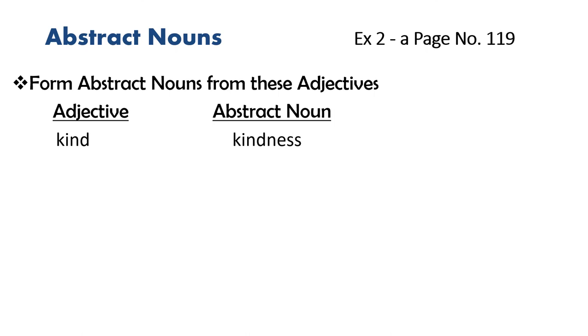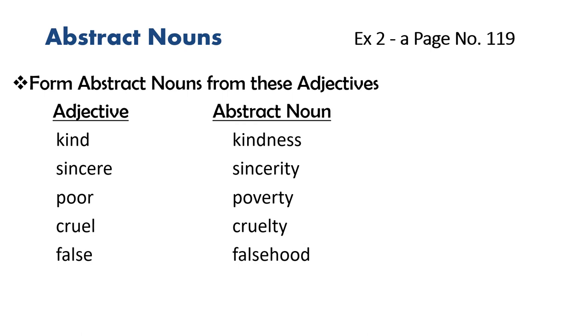The first adjective is kind and the abstract noun is kindness, sincere, sincerity, poor, poverty, cruel, cruelty, false, falsehood.